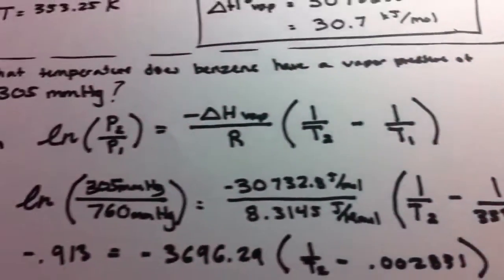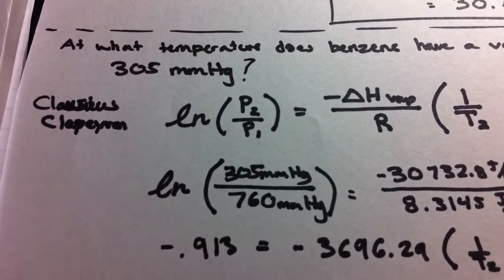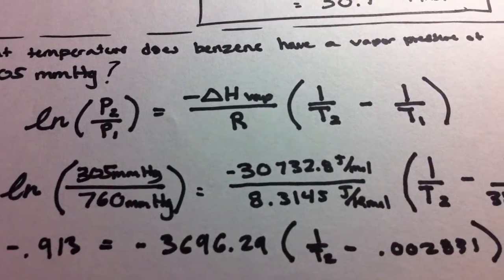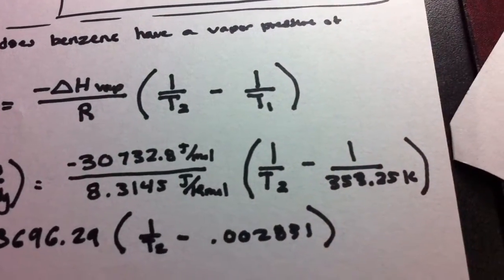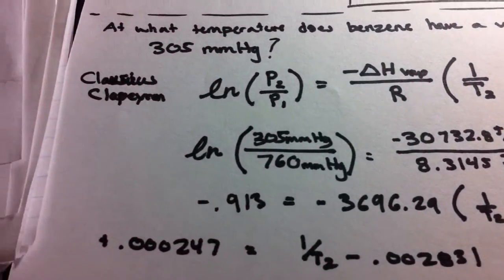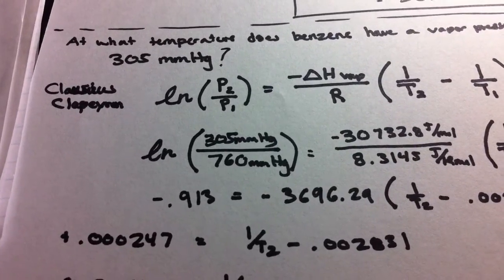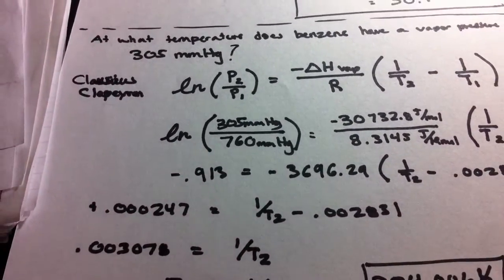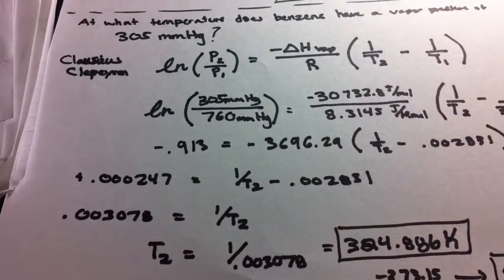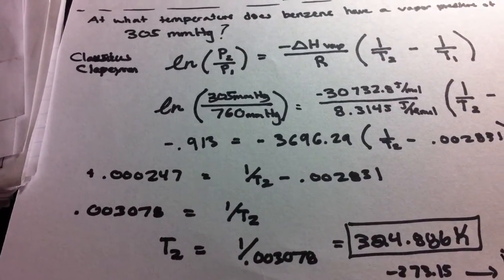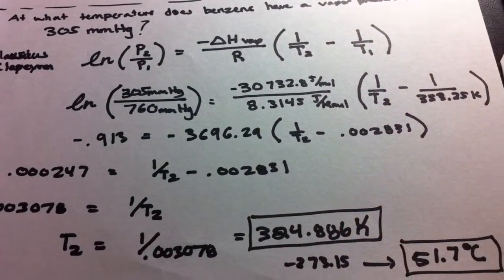That's going to be T2 that we're trying to find. We have the natural log. We simplified that top part and simplified that. Basically, what we did was just divide, and then we added, and then we cross-multiplied, and then we simplified.